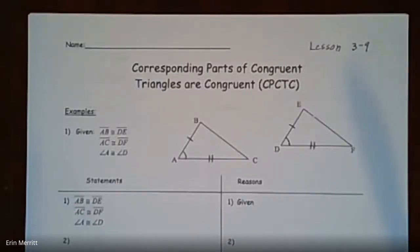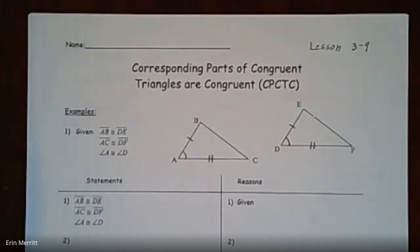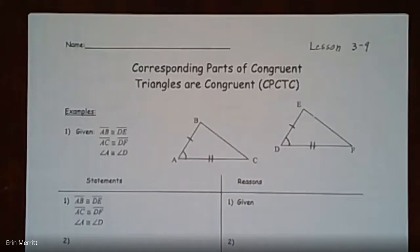Hey geometry students, it is day nine and we are going to keep on rolling with proofs — we're almost to the end. What we are looking at today is titled 'Corresponding Parts of Congruent Triangles are Congruent,' abbreviated CPCTC. It's one of those handy little abbreviations, but we have to make sure we know when we're allowed to use it. Let's walk through the first few examples.